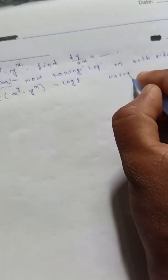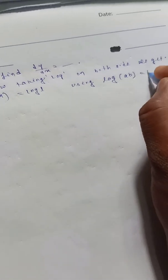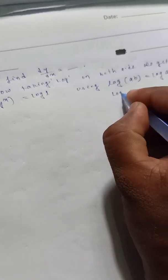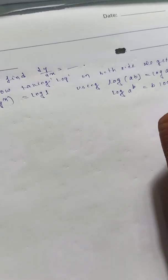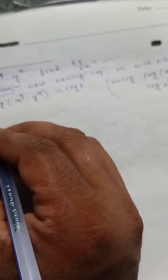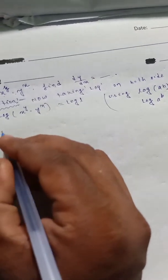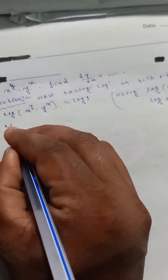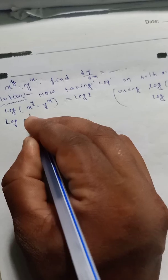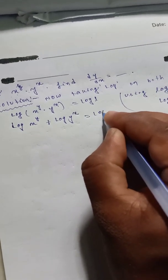Using the log rules: log(ab) = log a + log b, and log(a to the power b) = b·log a. Applying these, log x to the power y plus log y to the power x is equal to log 1.